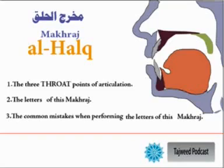This second makharij is called makharij al-halq. Al-halq represents the first makharij coming after the lungs and after the chest, where the air comes out before reaching the oral cavity, which is the mouth. I am going to talk about the three throat points of articulation — there are three points — and divide them into six letters, discussing these letters of this makharij.